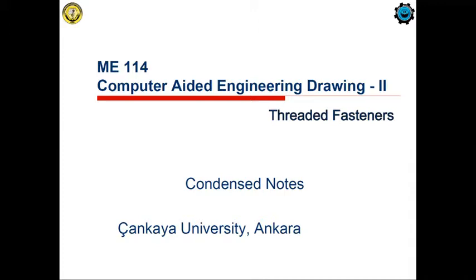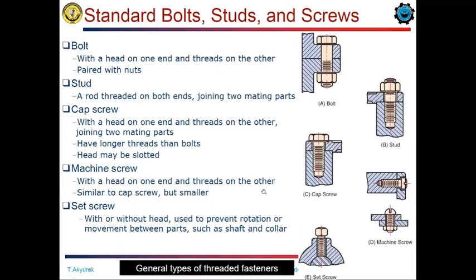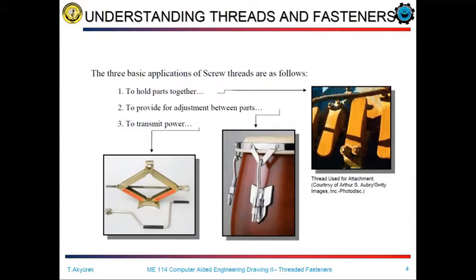In this video, we will cover threaded fasteners. We can classify the purpose of threaded fasteners in three main topics. The first one is to hold the fasteners together. The second one is to make the adjustment between the fasteners, and the third one is to transmit the fasteners.